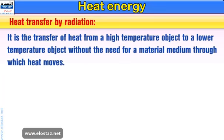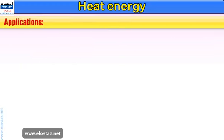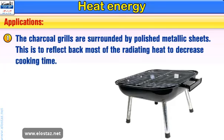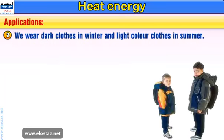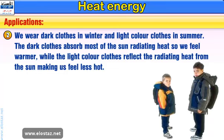Definition of heat transfer by radiation: It is the transfer of heat from a high temperature object to a lower temperature object without the need for a material medium through which heat moves. Note that the sun is not the only source of energy radiation, since all light sources radiate heat to their surroundings. Applications: 1. Charcoal grills are surrounded by polished metallic sheets to reflect back most of the radiating heat and decrease cooking time. 2. We wear dark clothes in winter and light color clothes in summer. Dark clothes absorb most of the sun's radiating heat so we feel warmer, while light color clothes reflect the radiating heat making us feel less hot.